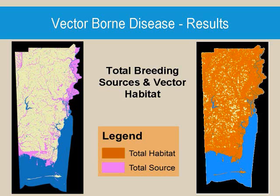The map on the right shows the combination of the vector breeding grounds — the most likely breeding areas of both vectors shown on one map. The map on the left is the buffered combination of both vector species' habitat, buffered to 300 meters to account for flight range. These areas are most likely to contain adult mosquitoes of either species.